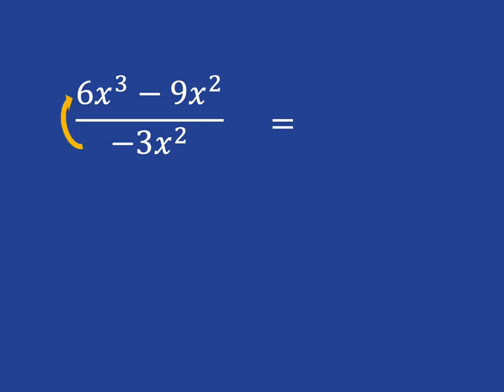So -3x² must divide into 6x³. 6 divided by -3 gives me -2, and x³ over x² is just x, so I've got -2x.